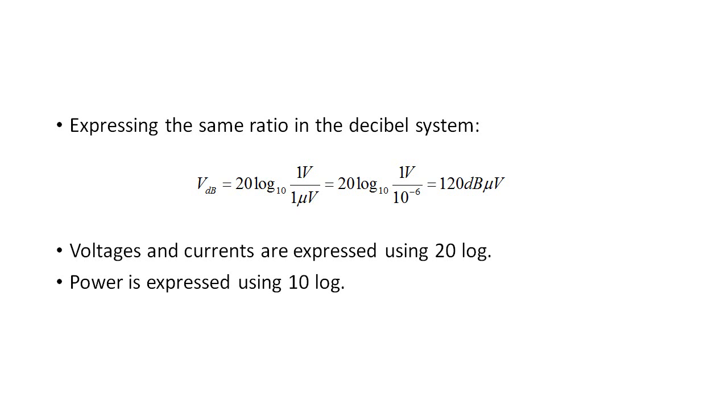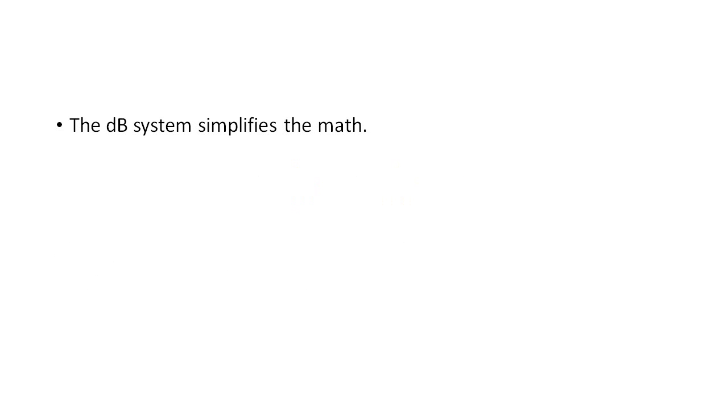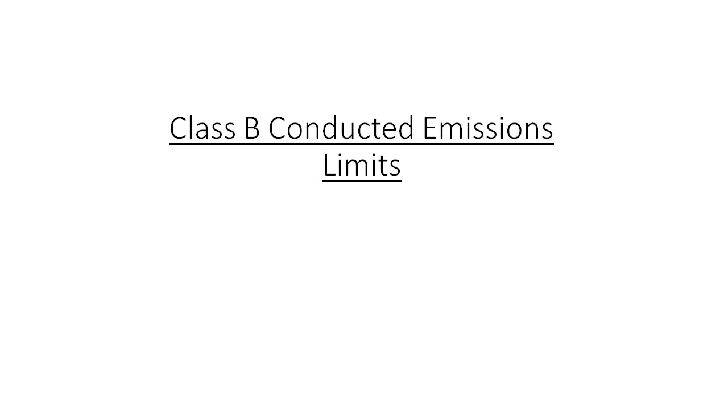The last thing I want to mention about using the decibel system when working with EMC units is that it simplifies the math required. By converting quantities to decibels, we convert multiplication and division into addition and subtraction. This is helpful when analyzing entire systems because of the juggling required in translating electric field emissions, measured as volts per meter, into power or voltage levels that are measured at the spectrum analyzer, after factoring in things like antenna factors, voltage drop in the form of cable loss, and amplifier gains.